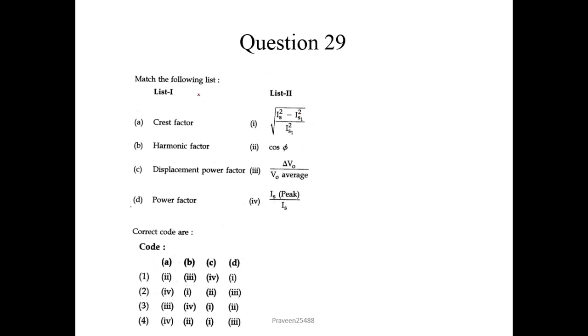Now question number 29. Match the following list. The Crest Factor is given here in the fourth option. The Harmonic Factor is given in the first one. The Displacement Power Factor is given as Cos Phi. So it is in second. And we know that Power Factor is V RMS upon V Average. So here correct order would be 4, 1, 2, 3. Second one would be the correct answer.